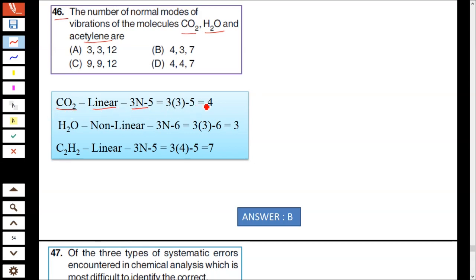H2O is a nonlinear molecule, 3N minus 6, which is 3 into 3 minus 6, which is 3. H2O shows 3 modes of vibration. Whereas acetylene is linear, 3N minus 5. There are 4 atoms, so 3 into 4 minus 5 which equals 7. Hence 4, 3, 7, option B is correct.